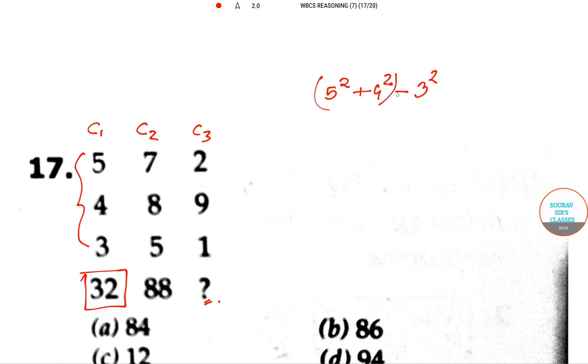So the answer is 5² means 25 plus 16 minus 9, the answer is 32. So I got my answer. It is in column 1. We can proceed to column 2 with the same logic.